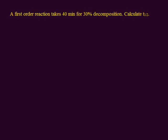A first order reaction takes 40 minutes for 30% decomposition of the reaction. Consider the initial amount of the reaction is 100, and after decomposition, since it decomposes 30%, the remaining amount will be 100 minus 30, which is equal to 70. We label this as the final amount of the reaction.